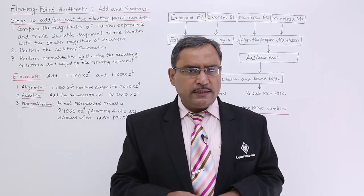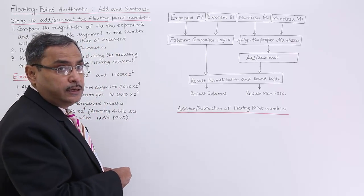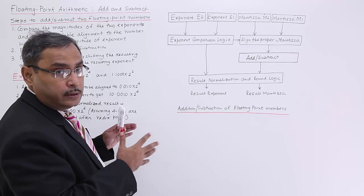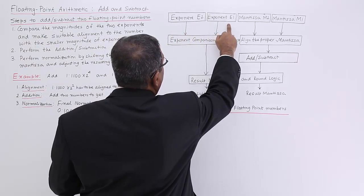Let me discuss the required floating point numbers addition/subtraction can be done using what hardware circuitry. Now we are having this component E1 and component E2.